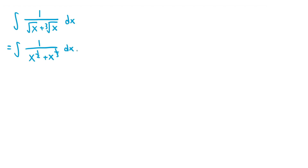When we're trying to do a rationalizing substitution with an integrand containing multiple fractional exponent terms, we need to look at the denominator of each exponent and determine the least common multiple of all the denominators. So in this case, x to the power of 1/2 has a denominator of 2, x to the power of 1/3 has a denominator of 3, and the least common multiple of 2 and 3 is 6.